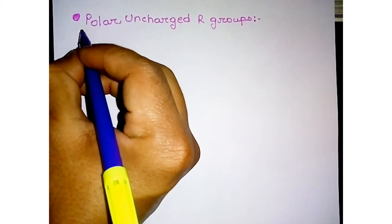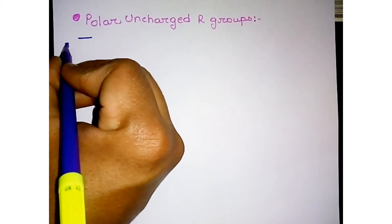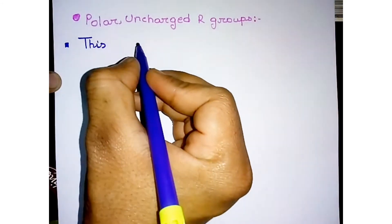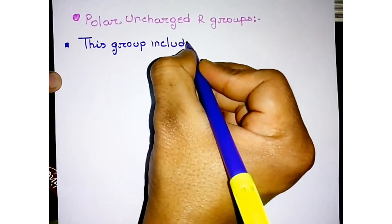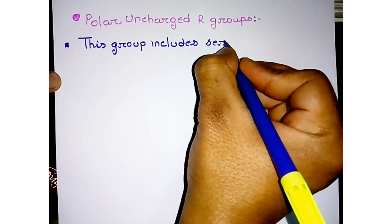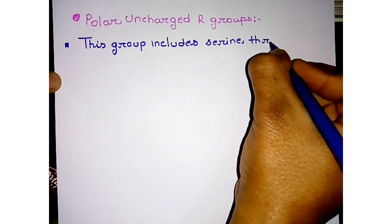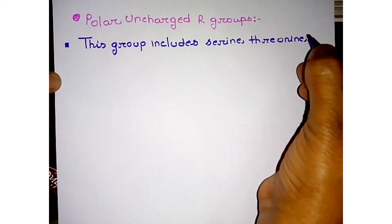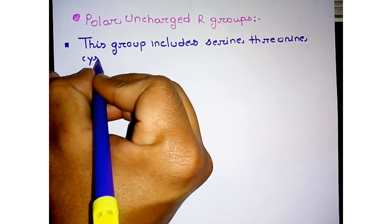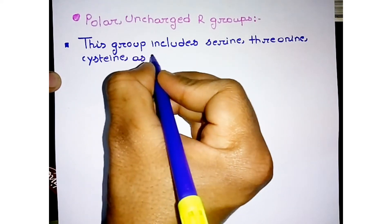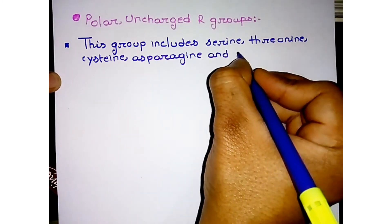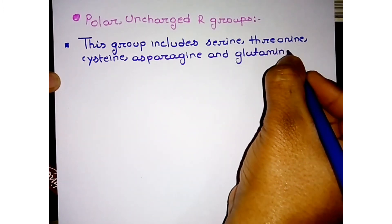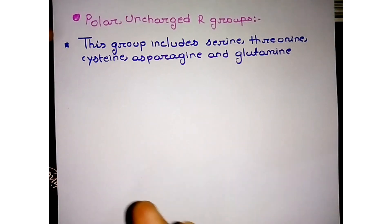The amino acids that belong to the polar uncharged R group include serine, threonine, cysteine (a sulfur-containing amino acid), asparagine, and glutamine. These are the five amino acids that belong to the polar uncharged R group.